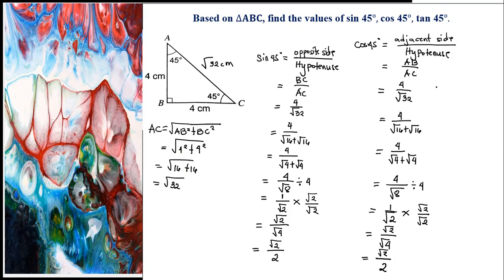Next is tangent 45 degrees. Tangent 45 degrees is equal to the opposite side divided by the adjacent side of the right-angle triangle. The opposite side is 4 centimeters and the adjacent side is also 4 centimeters. So 4 divided by 4 is equal to 1. Therefore, tangent 45 degrees is equal to 1. Thank you for watching, God bless.